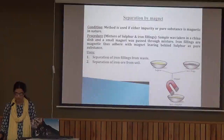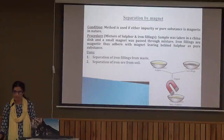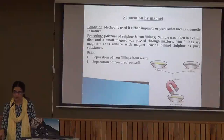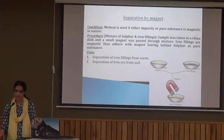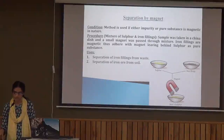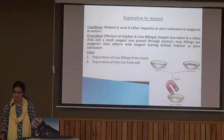Magnetic separation separates mixtures in which one of the components is iron, which is magnetic in nature. For example, we can separate a mixture of iron and sulfur: iron will cling to the magnet passed through the mixture, and the sulfur particles will be left behind. The essential requirement for this technique is that one of the components must be iron.